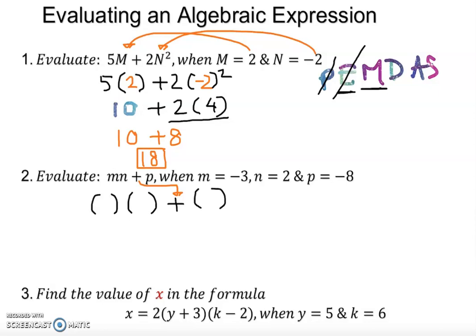So M is given as a negative 3. I can use N as a negative 3. And N is 2. And obviously there is a plus after that and p is equal to negative 8. You can type this the way it is now in the calculator. You can get your answer. Or we do the PEMDAS.